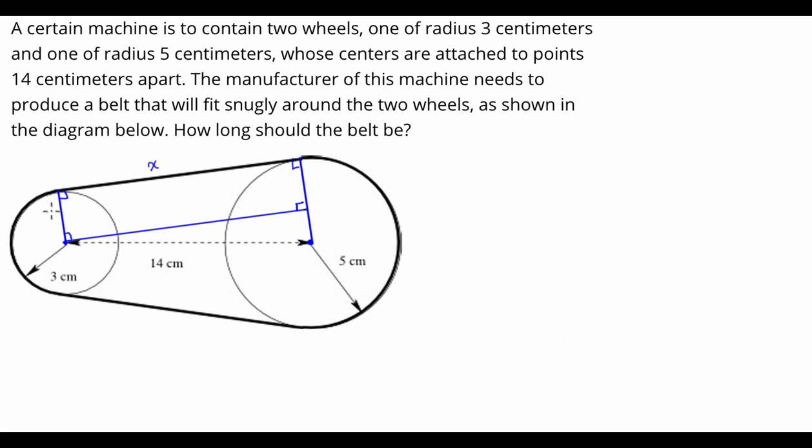And so we have this rectangle here. Now this side length of the rectangle is three, so it's going to mean that this side length is three, and because the radius of this entire circle is five, it's going to mean the side length of this is going to be two.